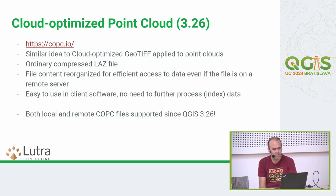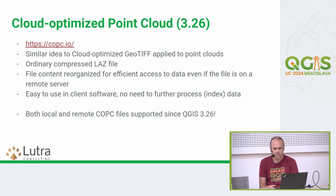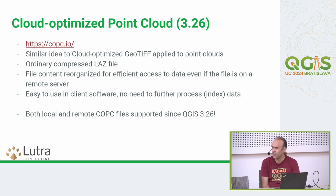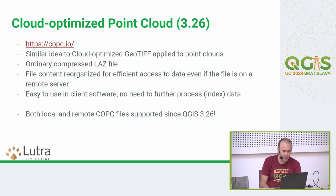In 3.26, cloud-optimized point cloud (COPC) support was introduced. This is a similar idea to cloud-optimized GeoTIFFs. It uses the same logic as the EPT format — it's a tile format structured in a single file and it can actually be streamed over the internet. Only the necessary parts of the file needed for rendering are fetched, so you can use data on remote servers without having to download gigabytes of data. Both local and remote COPC files can be loaded in QGIS.